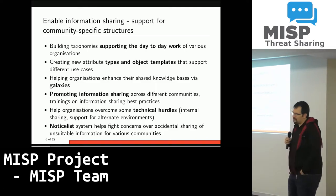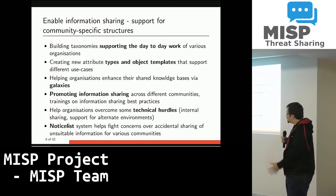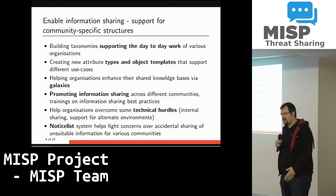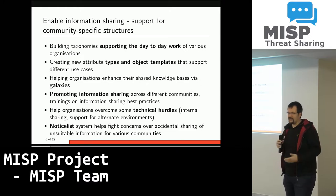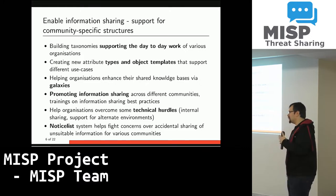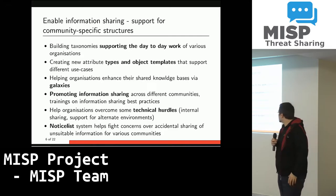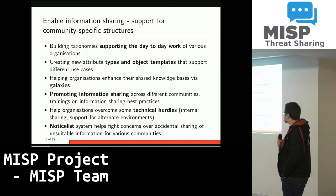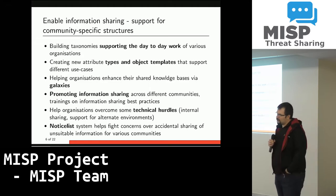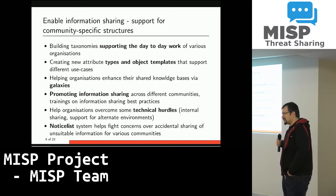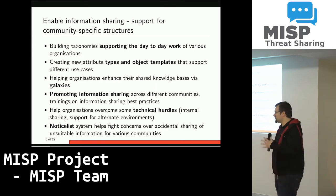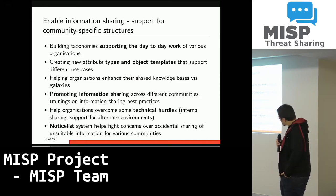Since we have taxonomies, one of the things we've been doing to ease information sharing is to reach out to organizations — which is partly why we do trainings and go to conferences — to hear what types of information they're sharing and how they describe that information in paper format or legacy tools. We try to give organizations the tools to use the same nomenclature when sharing. This is where taxonomies and galaxies come in, and we've seen a lot of contributions while also doing a lot of internal work mapping these to various organizations' needs.